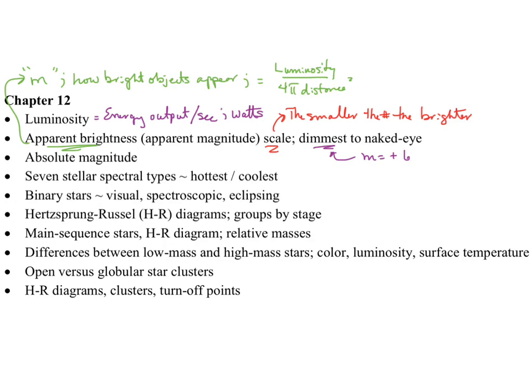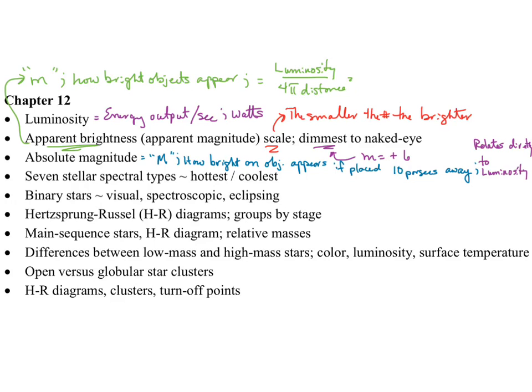The way the magnitude scale works: the smaller the apparent magnitude number, the brighter the star. Long ago, they set up the scale so that the dimmest object you can see in dark skies with your naked eye is basically plus 6. The other brightness scale is absolute magnitude — capital M — where you normalize for distance by putting the star at 10 parsecs from us and looking at how bright it is, so everybody's on the same playing field. Absolute magnitude directly relates to luminosity.